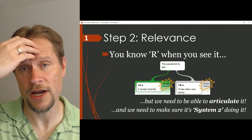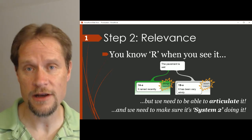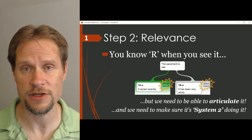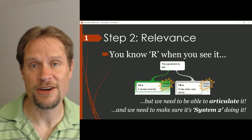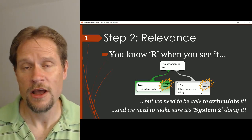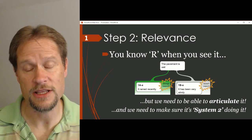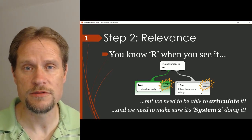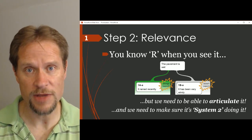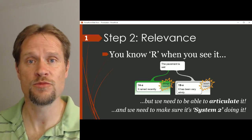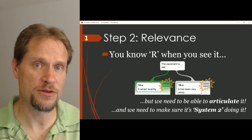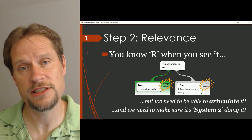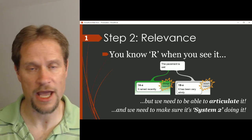We're deliberately slowing you down to derail System 1 and make sure it's System 2 making the judgments. Once you get practice using System 2 to make these judgments, it retrains System 1 to be better, so that as you get more familiar with doing this with System 2, you'll actually stop needing to use System 2 and can rely more confidently on System 1 to do a good job evaluating relevance, or the A or G part.